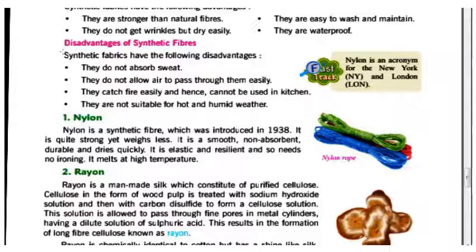Nylon is a synthetic fiber which was introduced in 1938. It is quite strong yet weightless. It is smooth, non-absorbent, durable, and dries quickly. It is elastic and resilient and so needs no ironing. It melts at high temperatures.